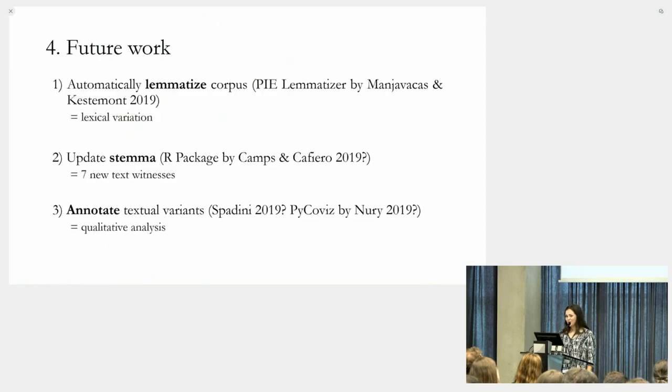To conclude, some to-dos in my research. I'm lemmatizing my corpus with PIE software. I'm really interested in spelling variation, but we also want to look at lexical variation, and to do that, it's handy to lemmatize the corpus. Second, I maybe want to update the stemma from Verdam and Leendertz, which is based on 10 text witnesses. By now, we have seven new text witnesses, and we are eager to discover how they relate to this older stemma. Last but not least, I want to annotate textual variants. This is a very nice quantitative analysis, but I'm also really interested in qualitative analysis, so I can try to understand this very complex copying process by medieval scribes. Thank you very much.